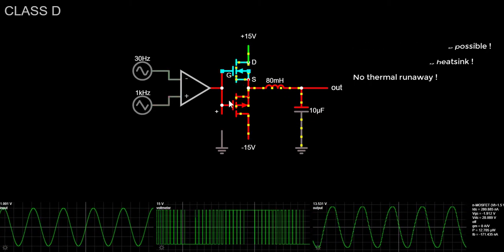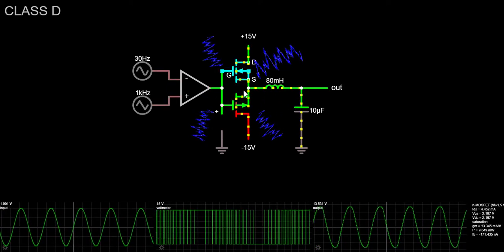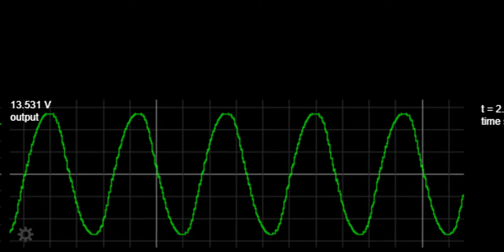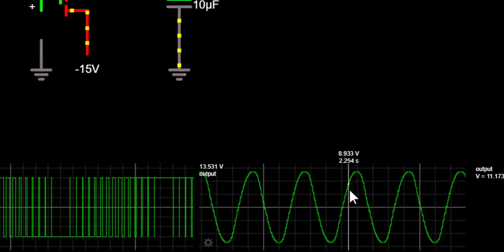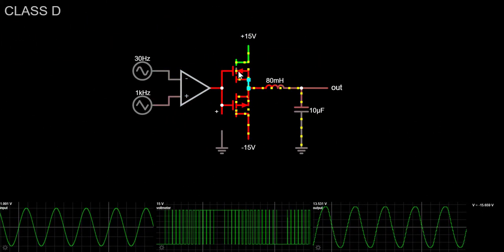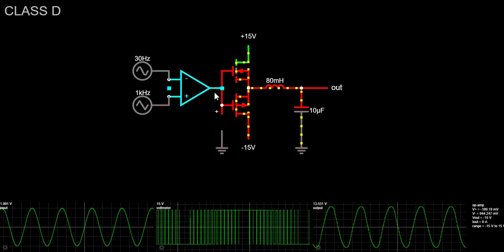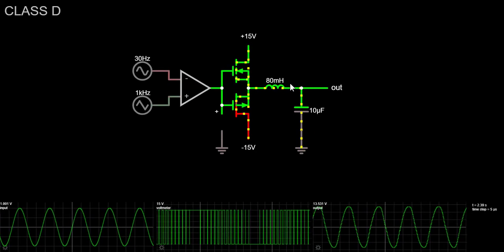The downsides are the problems of emission of high frequency noise, switching feed-through to the output, and the difficulty of achieving excellent linearity. Class D amplifiers are nearly universal in inexpensive audio equipment, and they're increasingly finding their way into high-end audio equipment.